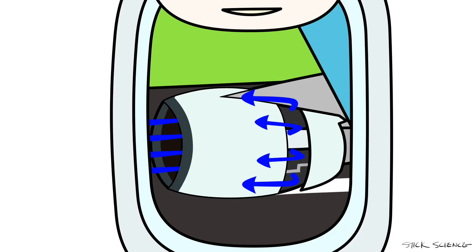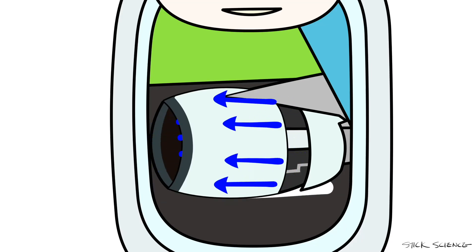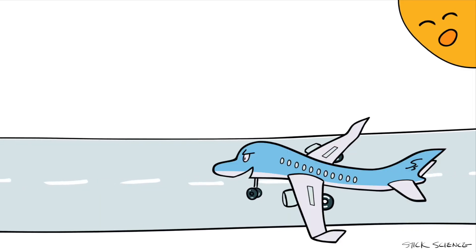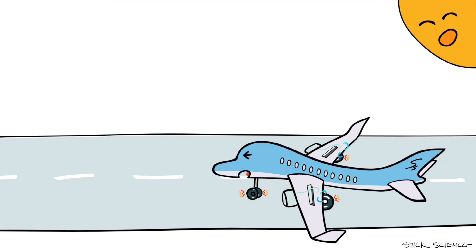When it's raining or snowing, you can even see the reverse thrust throwing water and snow in front of the engine. While reverse thrust is interesting to watch, usually it's the brakes that do most of the job.